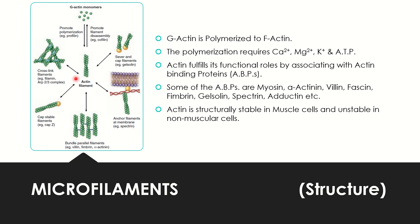As shown in this illustration, the actin filament is made up of the polymerization of G-actin monomers into an F-actin polymer. These polymers then associate with some proteins to form parallel filaments, which then serve their functional roles.